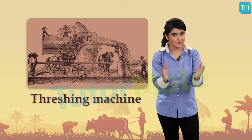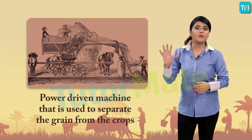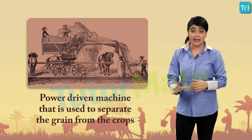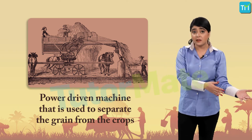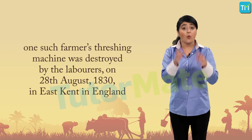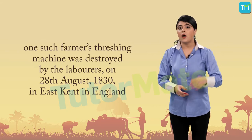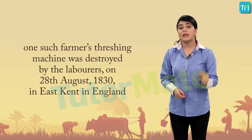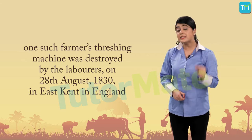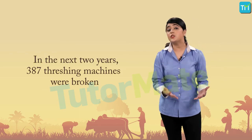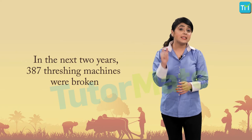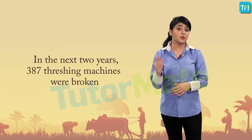A threshing machine is a power-driven machine used to separate the grain from the crops. One such farmer's threshing machine was destroyed by labourers on the 28th of August 1830 in East Kent, England. This destruction did not stop with one machine — in the next two years, 387 threshing machines were broken.